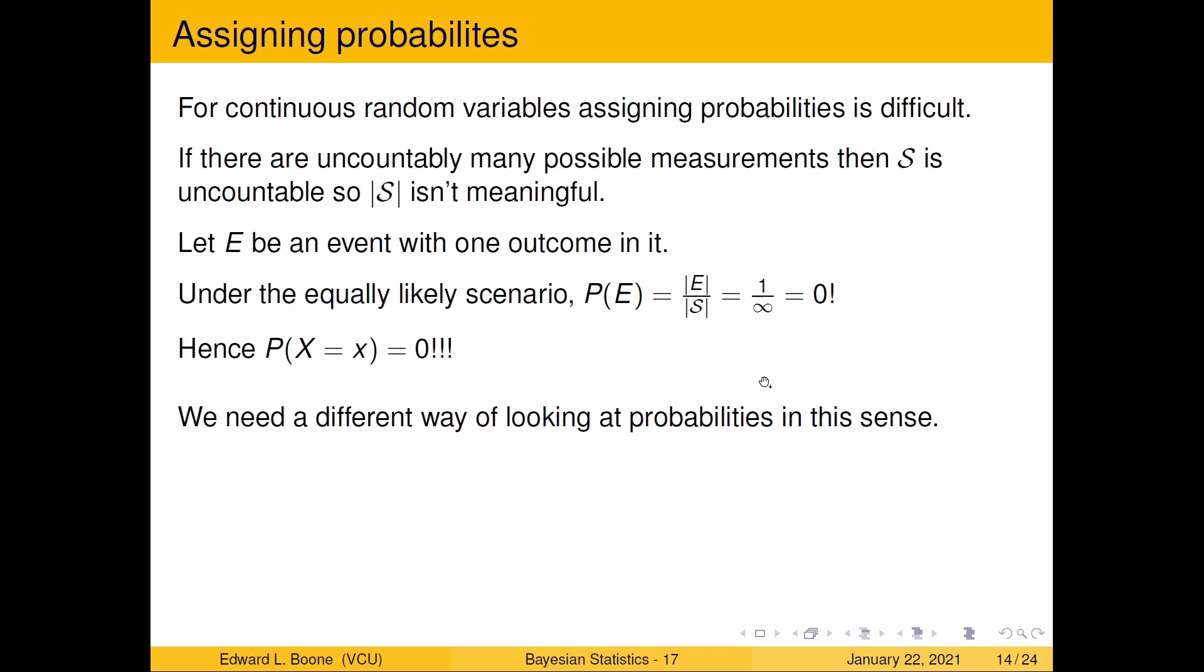This causes a big problem because this means the probability that x equals little x is equal to zero, which is not really useful. I'm going to illustrate that here in just a second. So we're going to need a different way of looking at this.